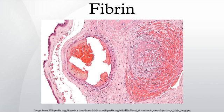Fibrin is a fibrous, non-globular protein involved in the clotting of blood. It is formed by the action of the protease thrombin on fibrinogen, which causes the latter to polymerize. The polymerized fibrin together with platelets forms a hemostatic plug or clot over a wound site.